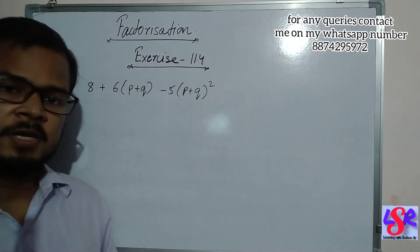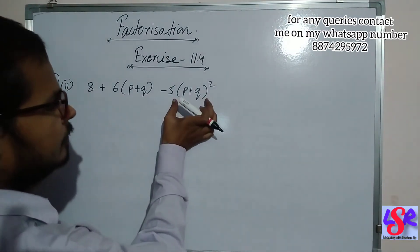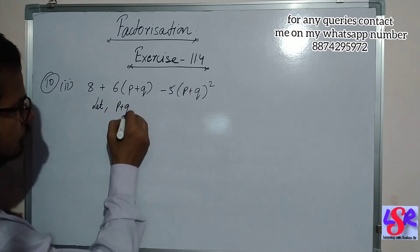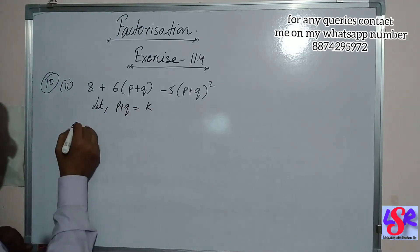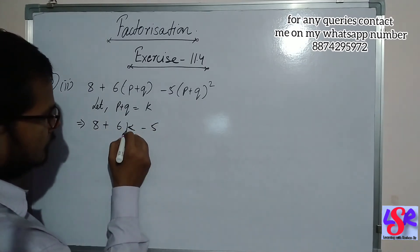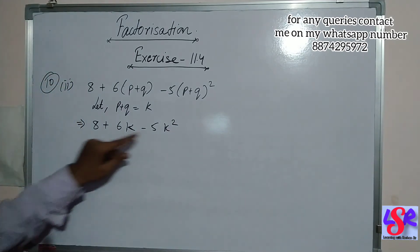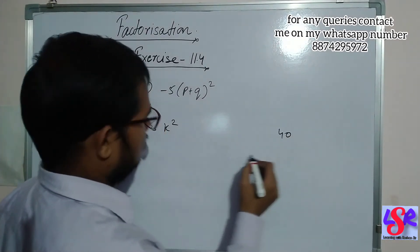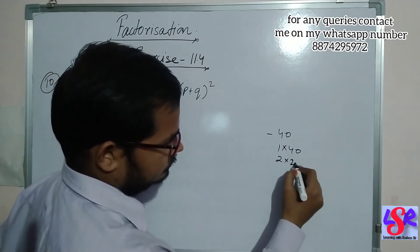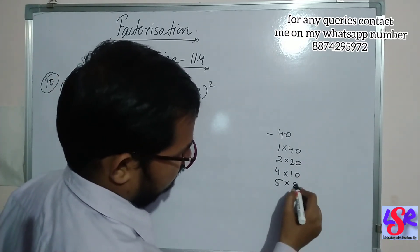Now let's go with question number 10, second part. Here we are having 8 plus 6 in a bracket p plus q minus 5 times p plus q to the whole square. First of all we let p plus q equals to k, and we get 8 plus 6k minus 5k square. Now 8 into 5 is 40, and as we have plus and minus signs the product is minus 40. The factors of 40 are 1 into 40, 2 into 20, 4 into 10, and 5 into 8.